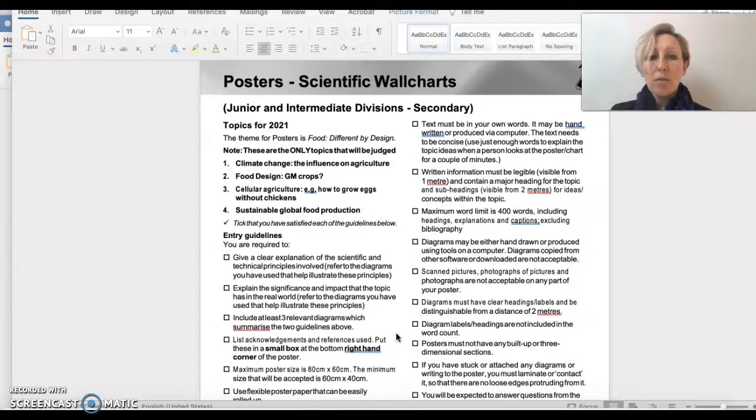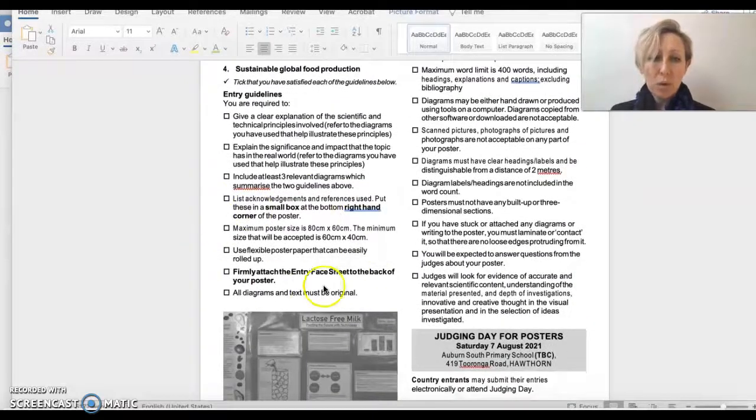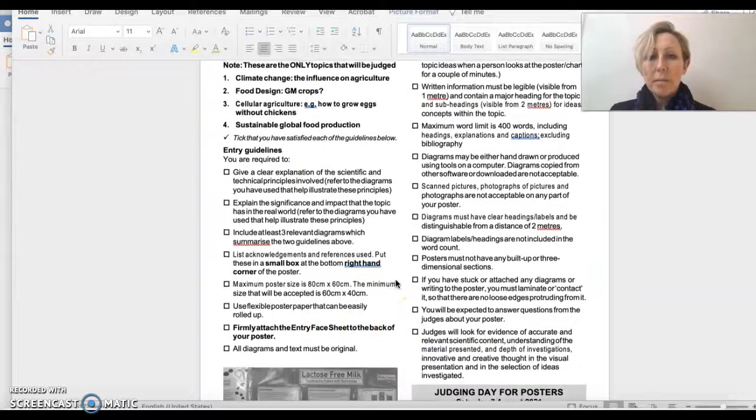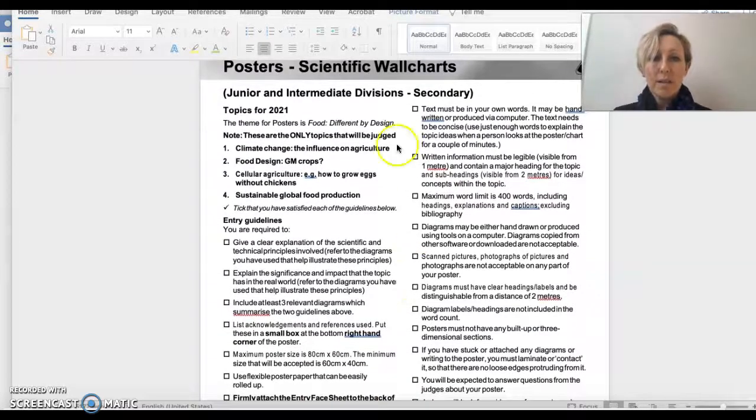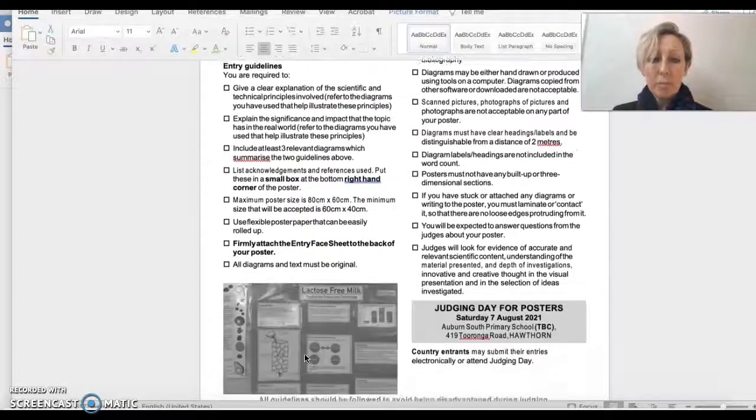A poster or a wall chart again has limited titles for you to explore, so it does need to be on Food by Design and one of these four options. There are also limits around the size of your poster, and one of the important things to note is that any images included in your poster need to be drawn by you. It doesn't need to be on paper, it could be electronic drawing, but it can't be images available on the internet or in books. They will need to be original. There's some other limitations that we'll talk about when we're back in the classroom, but the thing to note on posters is that you are limited to the titles and it must be original.